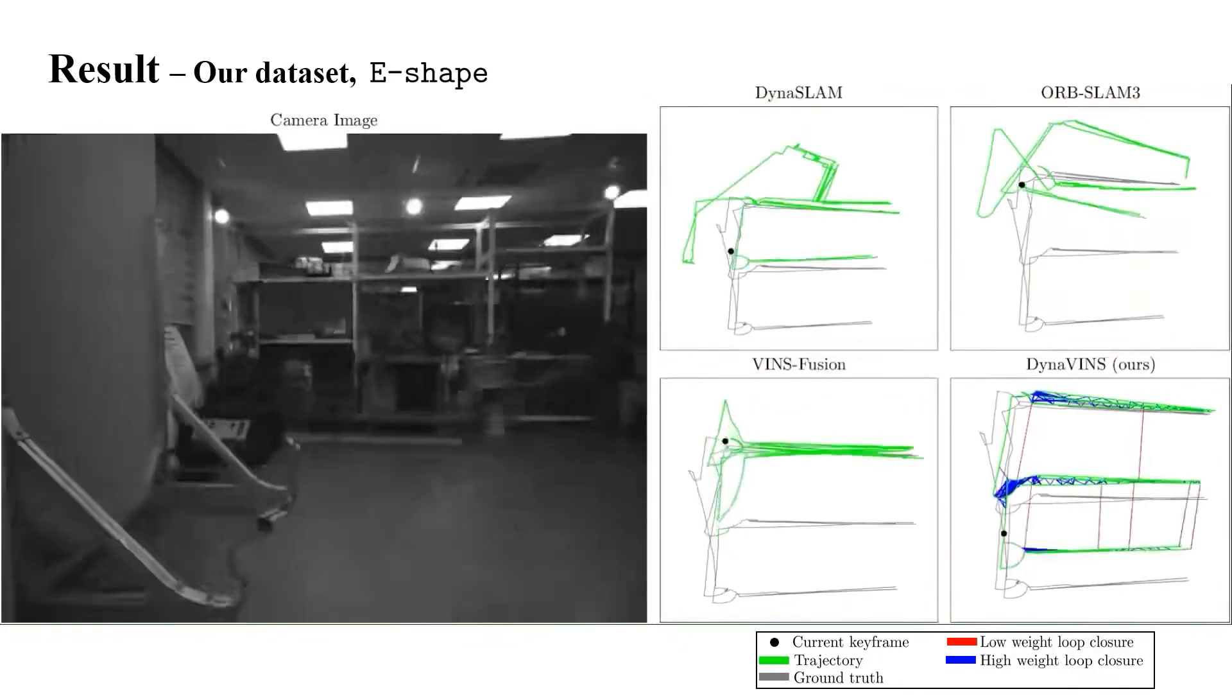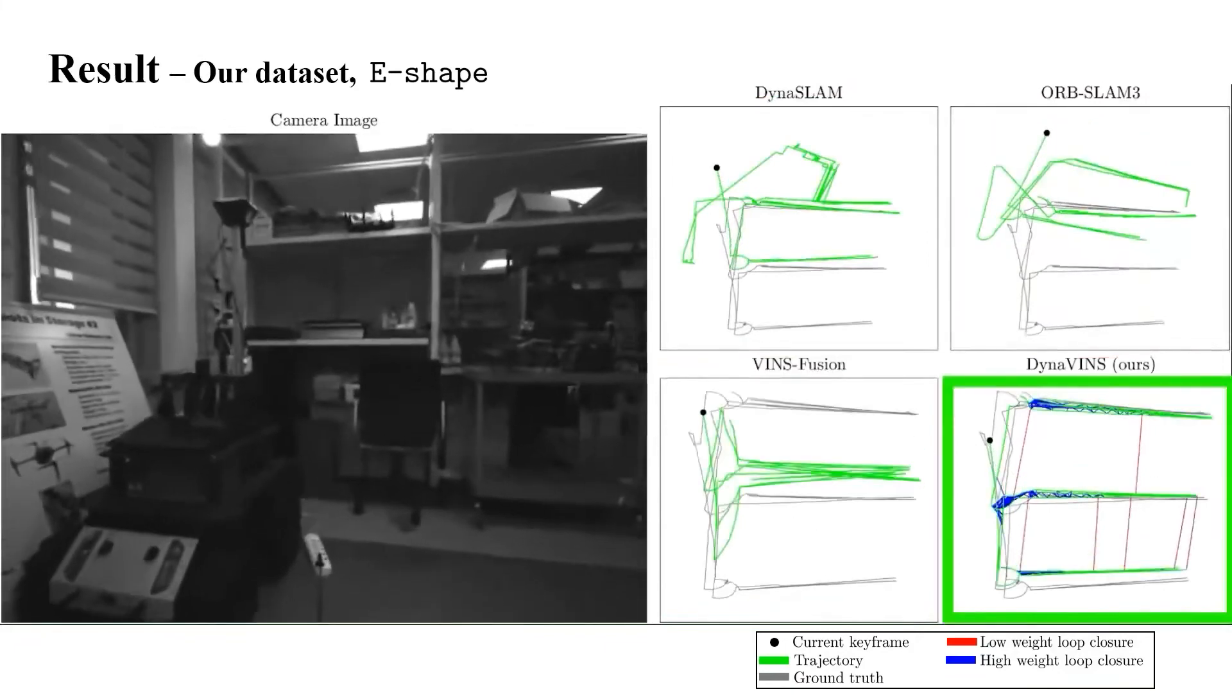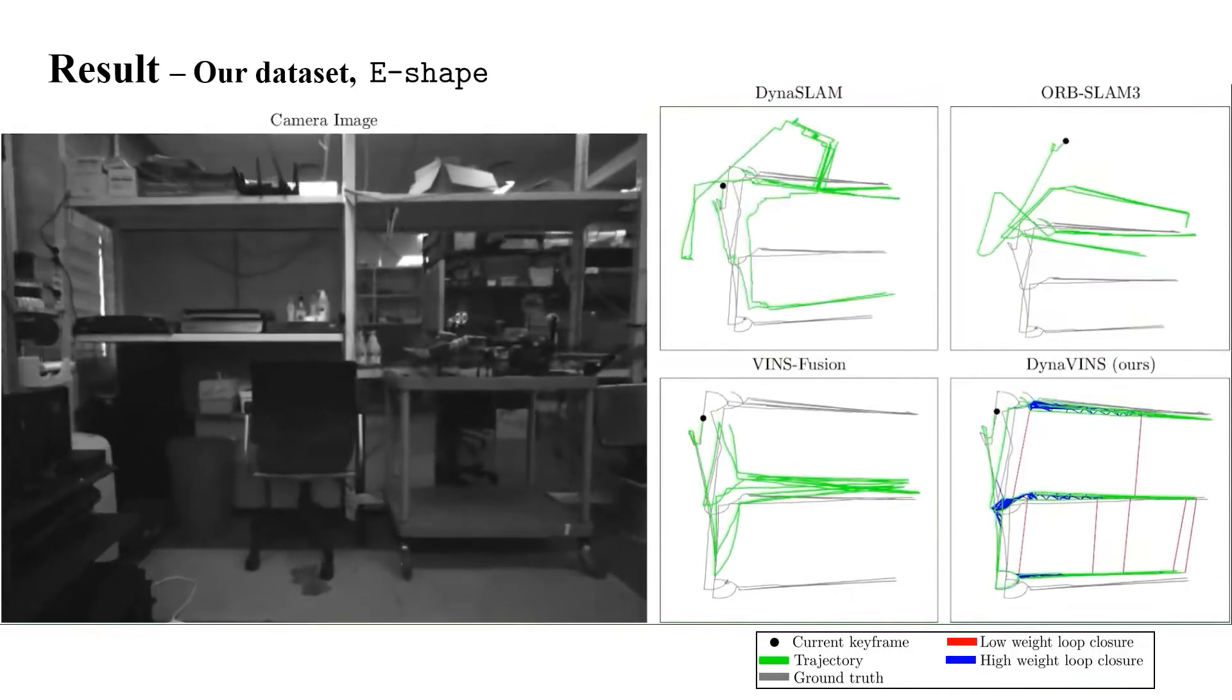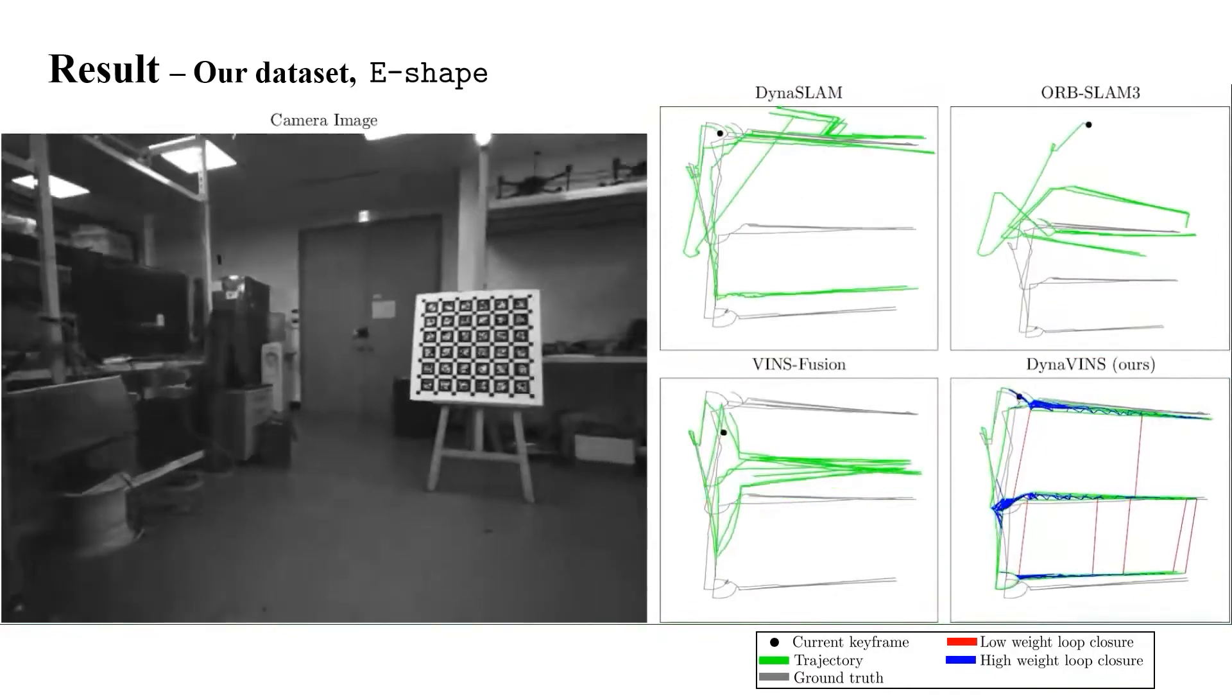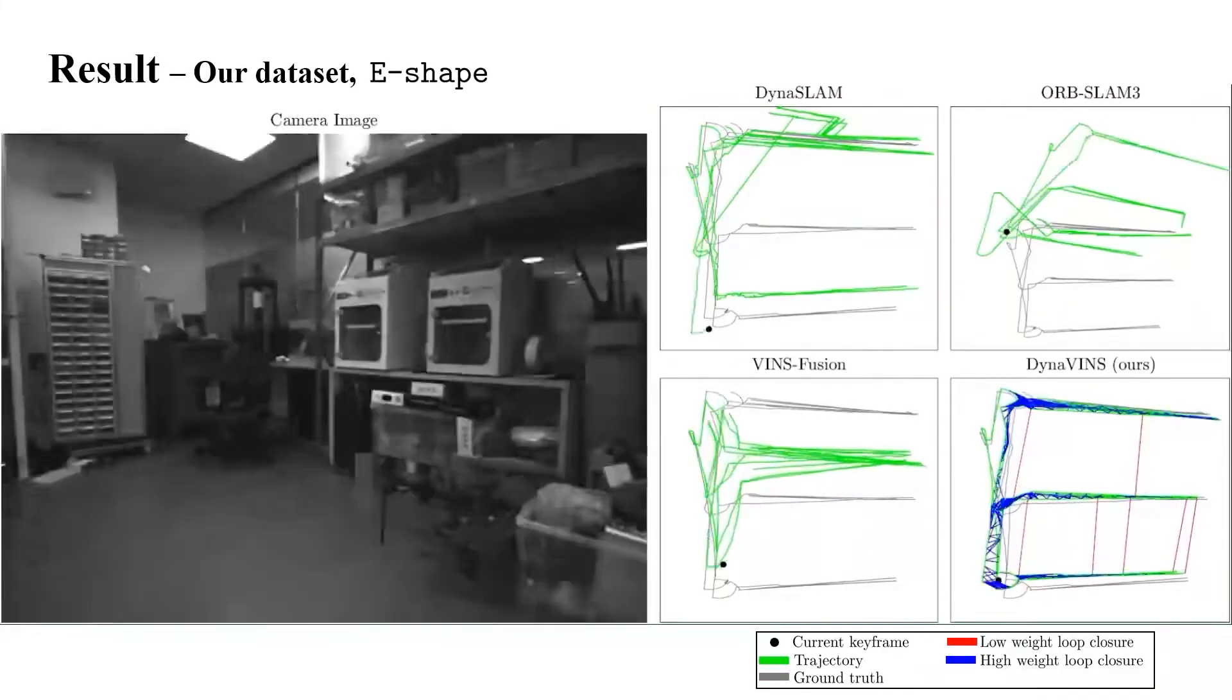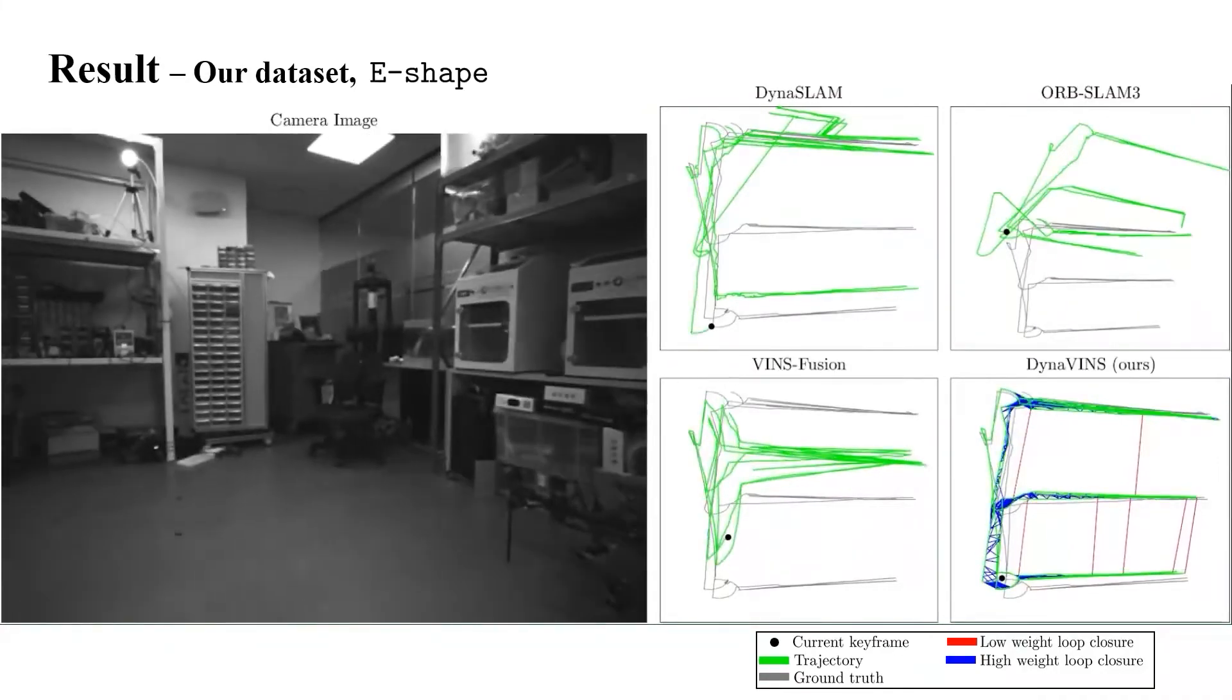When there are true positive loop closures good for optimizing all trajectories, our algorithm further reduces the effect of false positive loop closures. As a result, our algorithm has a more stable result compared to others.